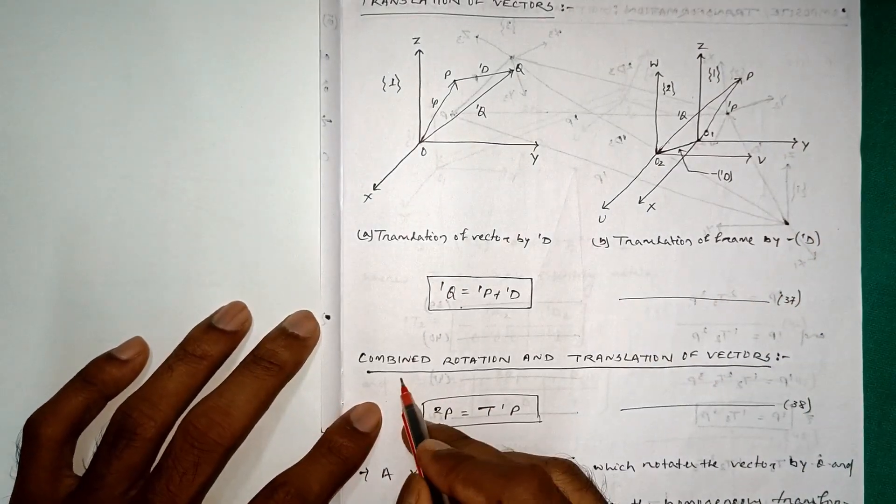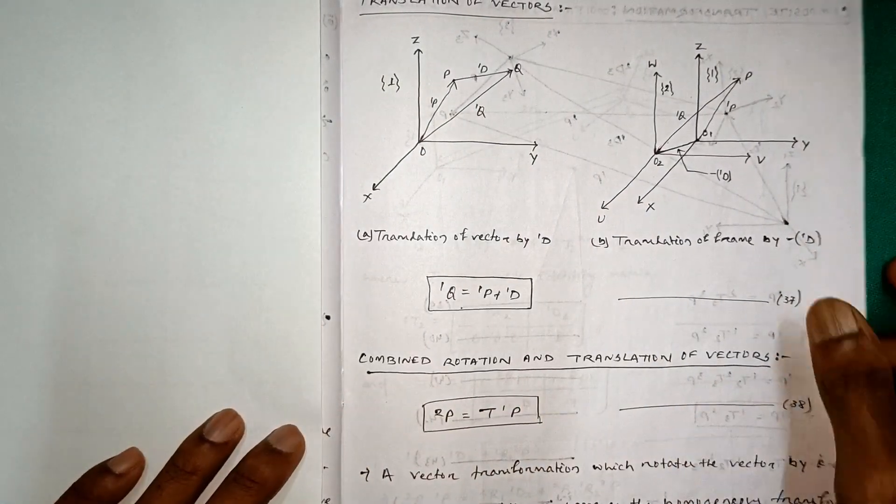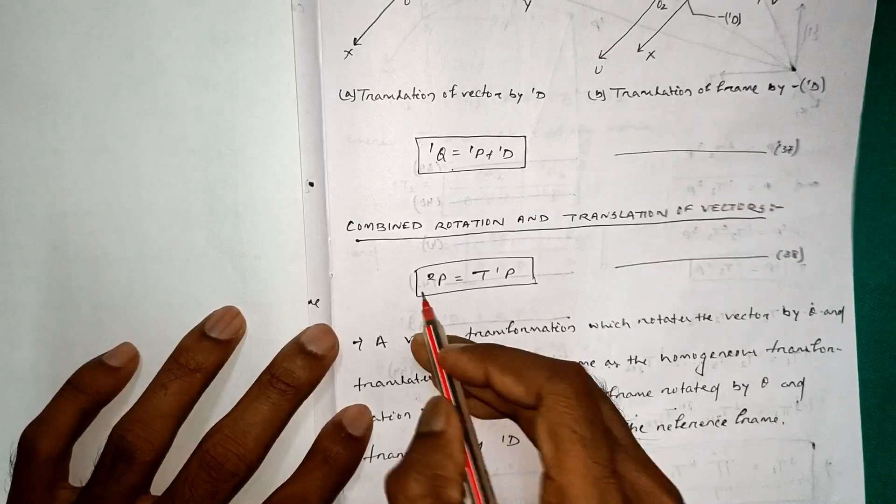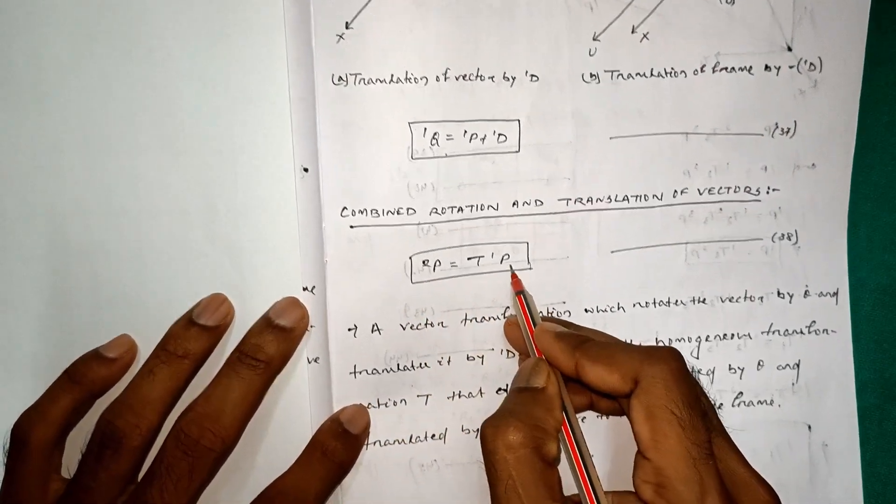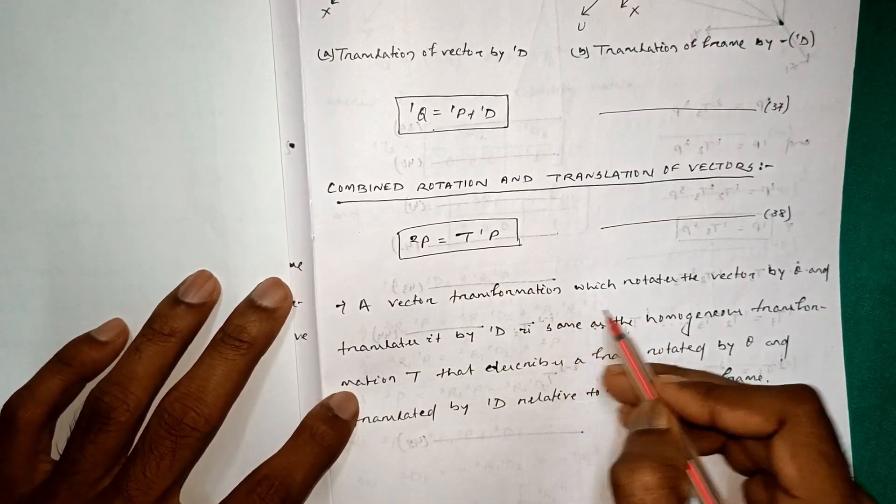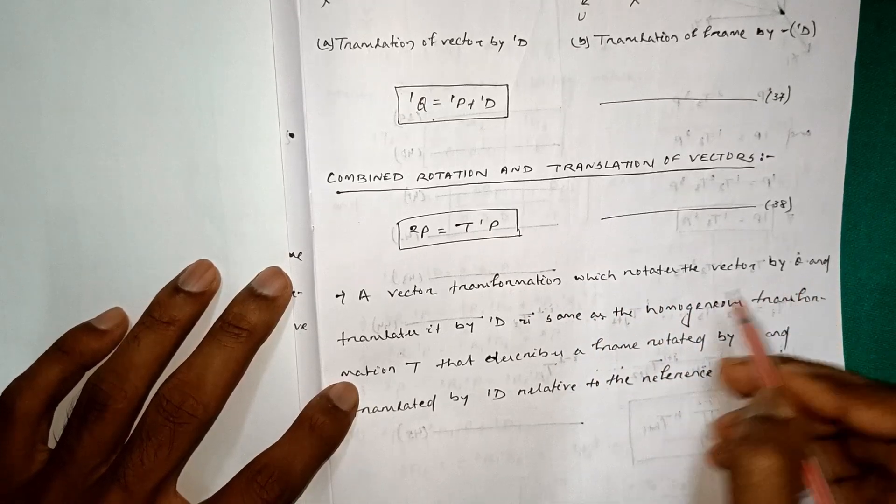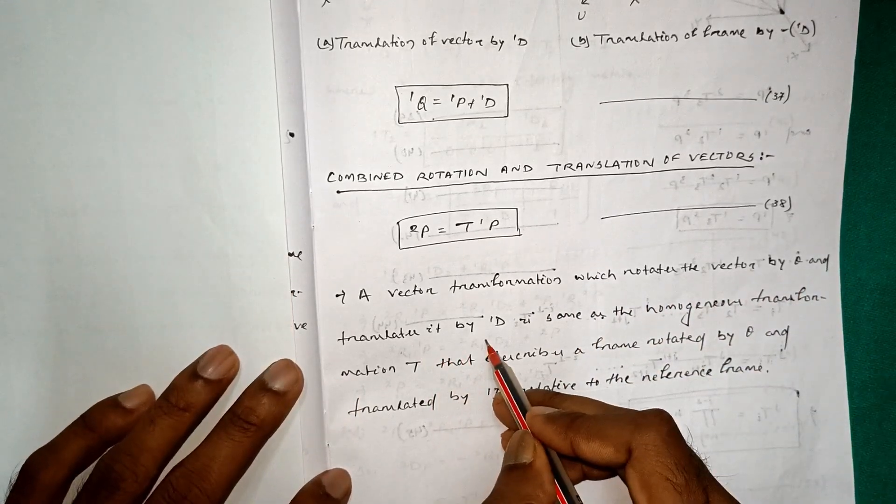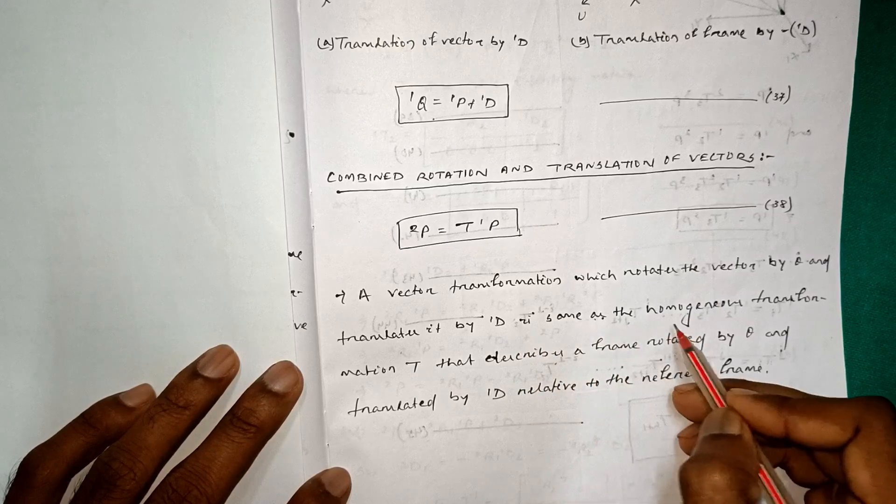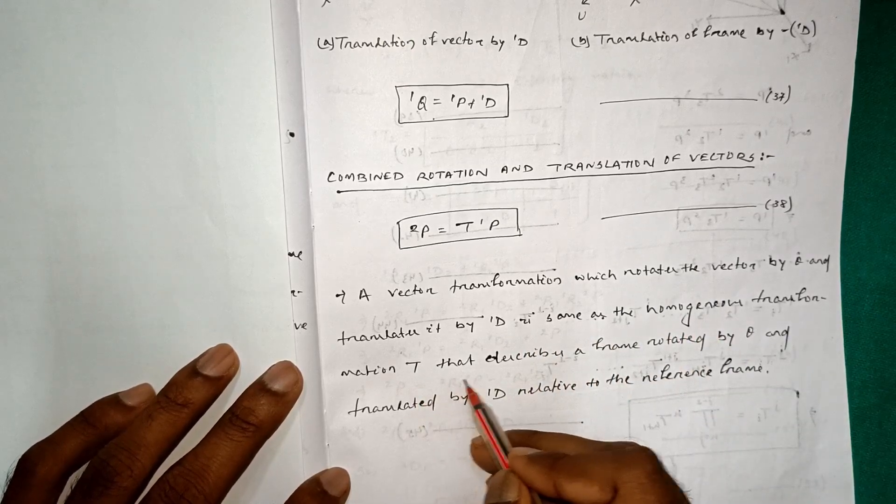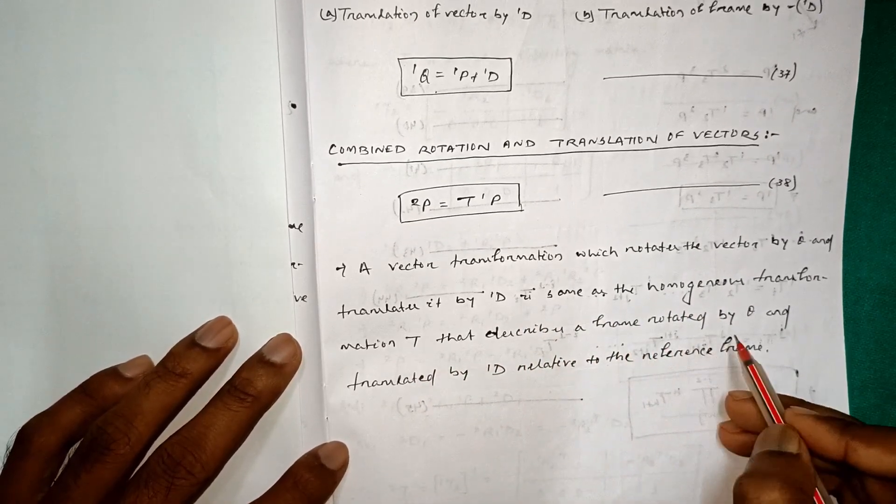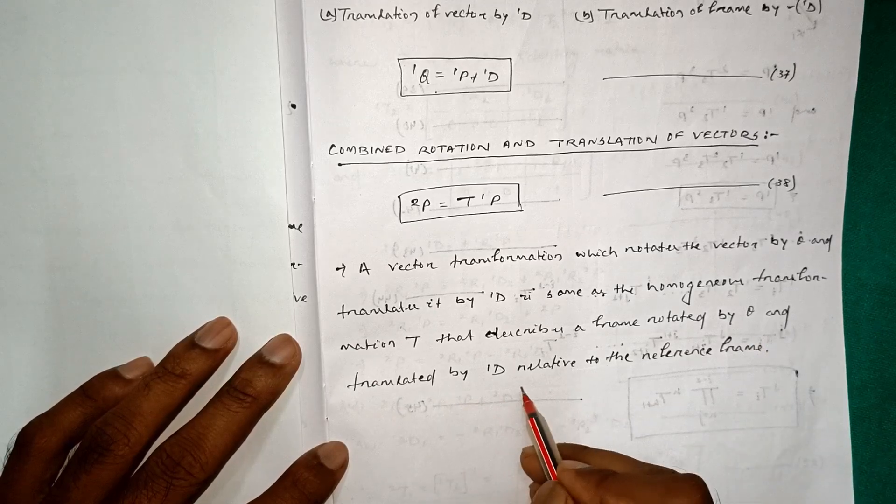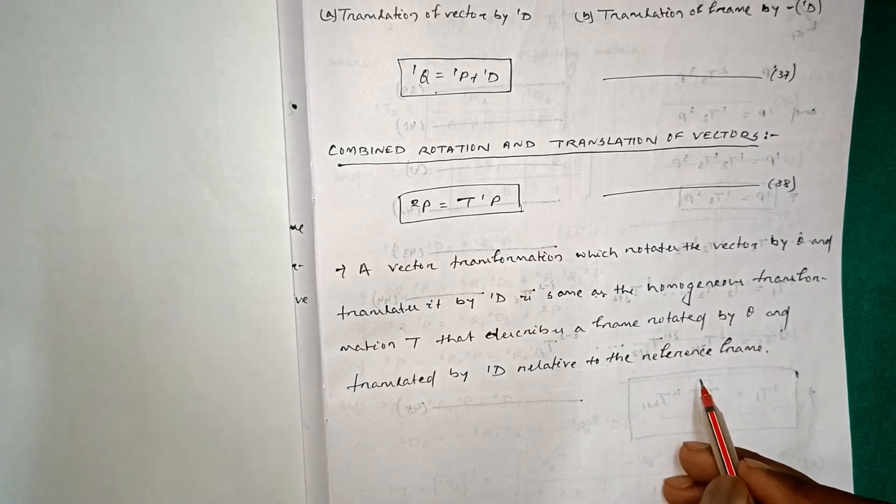Now the third one: combined rotation and translation of vector. Here 2P is equal to T1P. A vector transformation which rotates the vector by theta and translates it by 1D is the same as the homogeneous transformation T that describes a frame rotated by theta and translated by 1D relative to the reference frame.